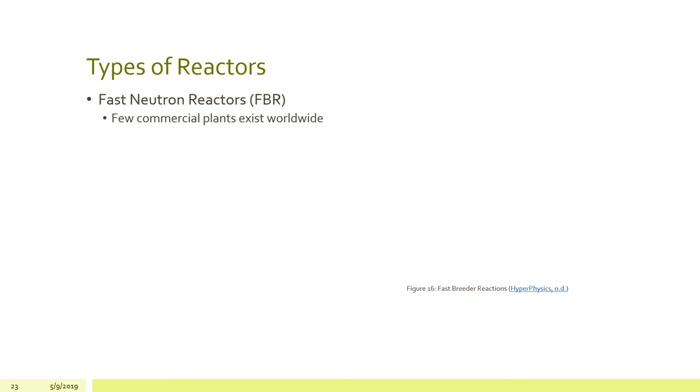And lastly, we have our fast neutron reactors, or fast breeder reactors. There's very few commercial plants that exist worldwide, and they utilize fuel that requires fast neutrons. They have no moderator because they wish their neutrons to maintain their energy. However, they still use the coolant molten metal instead of water. That molten metal is what transfers the heat to the secondary water, which generates steam. And this type of reactor is capable of using nearly all of the energy and the fissile material in the reactor.